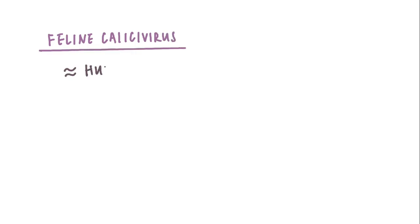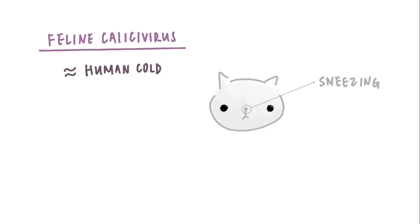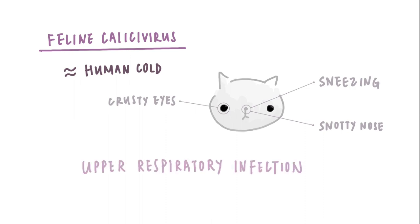Welcome back to Sesame and Puff. Today we'll talk about feline calicivirus. Feline calicivirus is often described as cat flu, so like the human cold, we'll see sneezing, snotty noses, and crusty eyes. If your vet sees these on your cat, he or she may say that your cat has an upper respiratory infection.